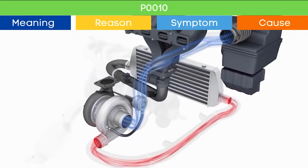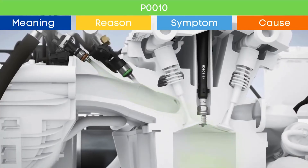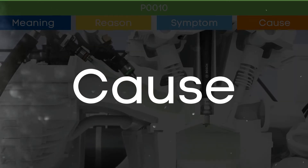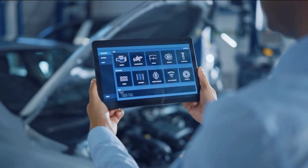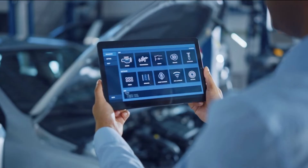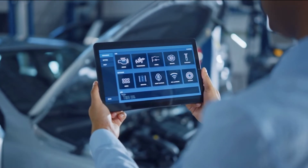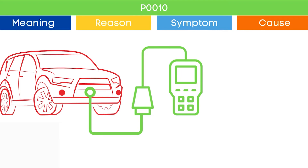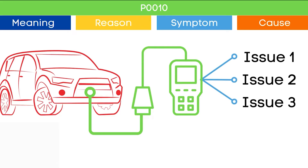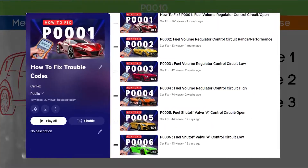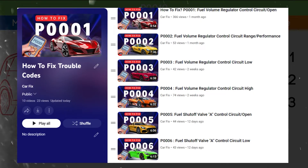Now that we understand the symptoms of P0010, let's delve into the causes of P0010. The P0010 code may be triggered due to several causes. To ensure the root cause of the P0010 code, check other activated OBD2 codes. These other activated OBD2 codes may indicate malfunctions in other engine management system components, which may be the root cause of the P0010 code. You can find our playlist on the meaning and causes of each OBD2 code — the link is in the corner.